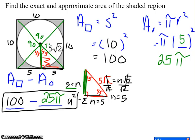Now to do the approximate, we are going to do some rounding. The 100 stays 100. If I do 25 times the pi button in my calculator, I get 78.5398. And so when I subtract 100 minus that long number, I get 21.46018.